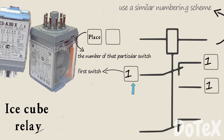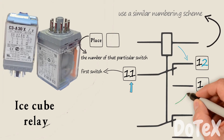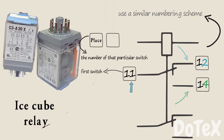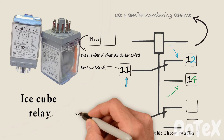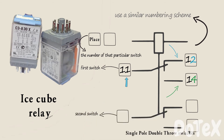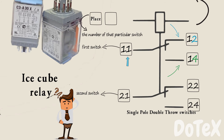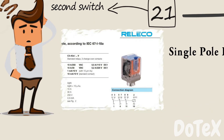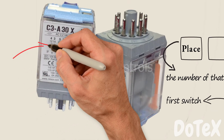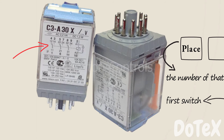The common terminal's second digit is one. A normally closed switch is given a two as the second digit. A normally open switch is given a four as the second digit. The terminals of the second switch would be two-one for the common, two-two for the normally closed side, and two-four for the normally open side. If you're unsure which pin is which, just look at the manufacturer's data sheet or on the side of the relay itself — usually the pin-outs are printed on the side.